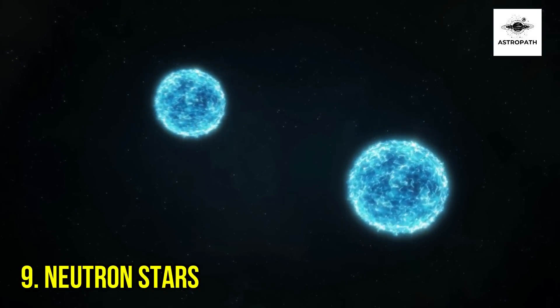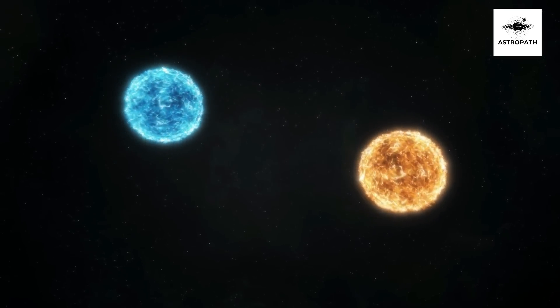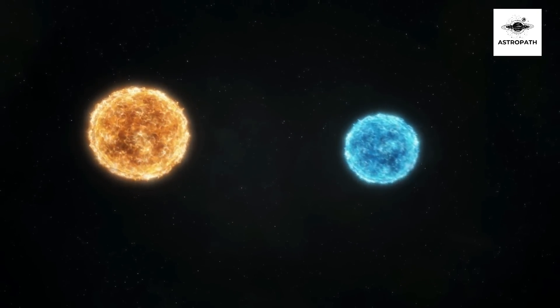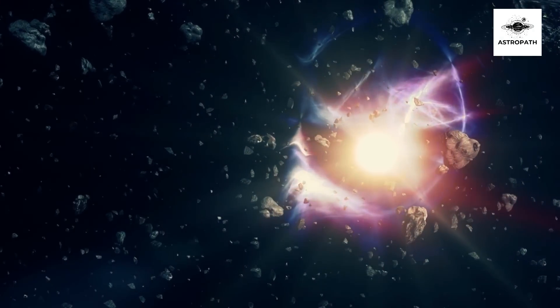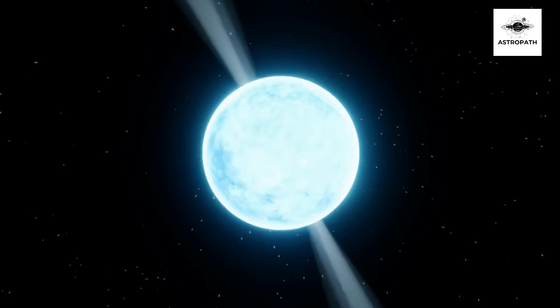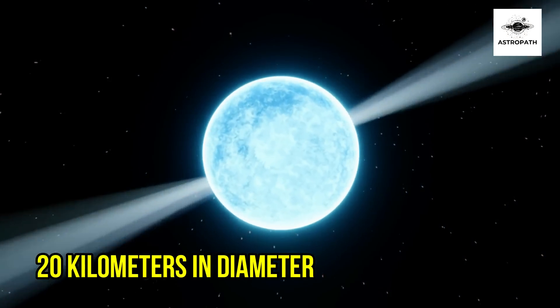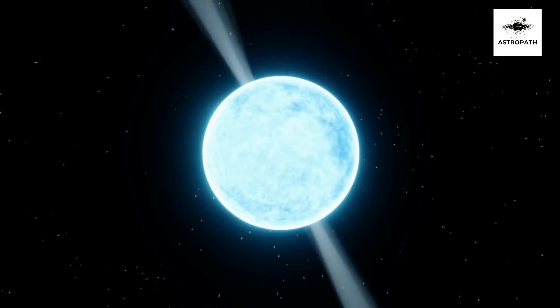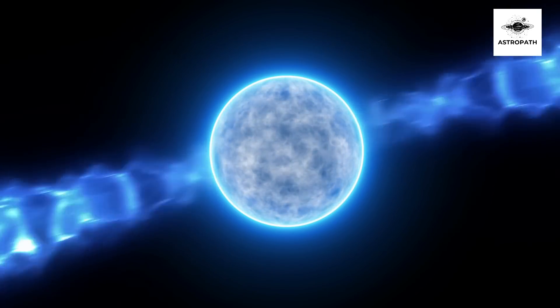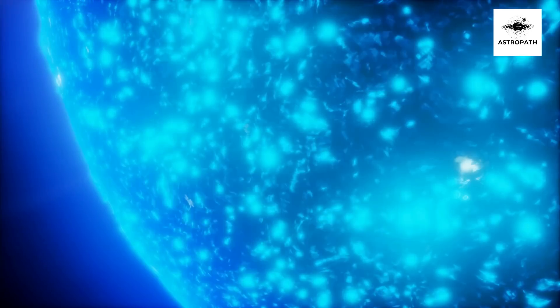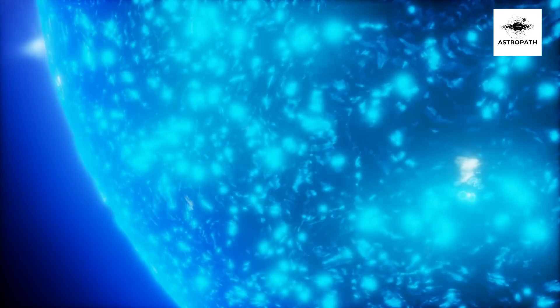Nine, neutron stars. Among the most extreme objects in the universe are neutron stars. These stars are born from the explosive death of another, larger star in a supernova. The remaining core collapses under gravity, producing a neutron star. Despite being only about 20 kilometers in diameter, they have up to twice the mass of our Sun, making them incredibly dense. So dense, in fact, that a teaspoon of neutron star material would weigh about a billion tons on Earth.